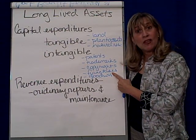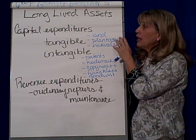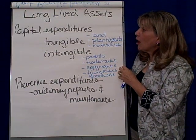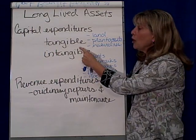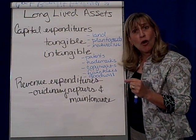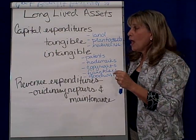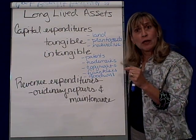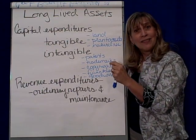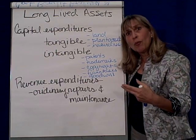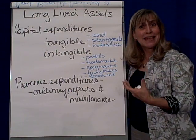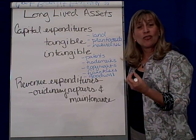There's another type of expenditure that's long-lived that we haven't really talked about — capital expenditures that we make to maintain or extend the life of tangible assets. Those are called improvements or betterments. Improvements, betterments, or extraordinary repairs are done to improve, extend the life, or extend the salvage or residual value — what we're going to sell those tangible assets for at the end of their useful life. They increase or enhance value.